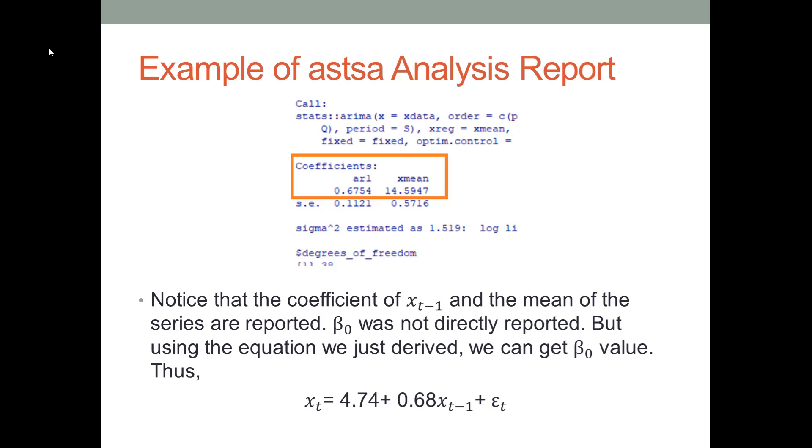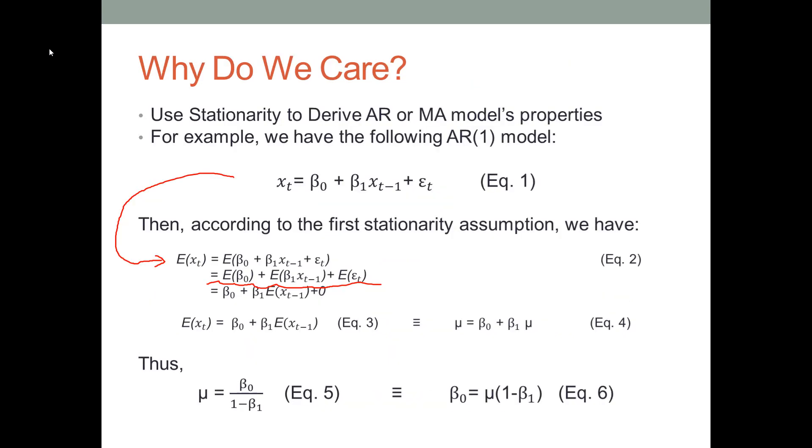Now we get the μ value, we get the β_1 value. How can we calculate the β_0? We use equation 6 we just derived based on the stationary assumptions. β_0 equals μ times (1 - β_1). We already know the μ value. We already know the β_1 value from the software. We can calculate the β_0 value.